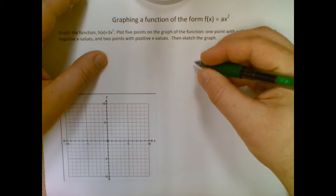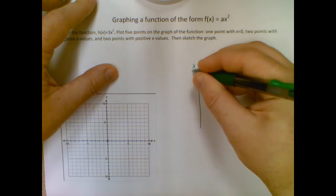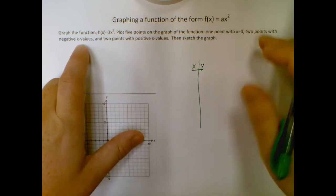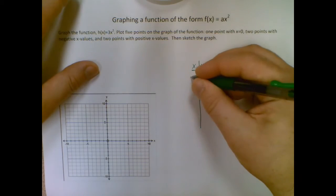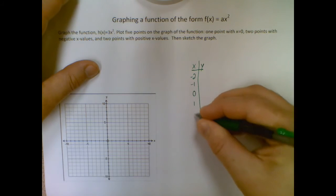So to set this up I need an xy table and I'm going to make sure I follow my structure here. So I need two negative, zero, and two positives. Let's just go with the smallest ones: negative two, negative one, zero, one, and two.